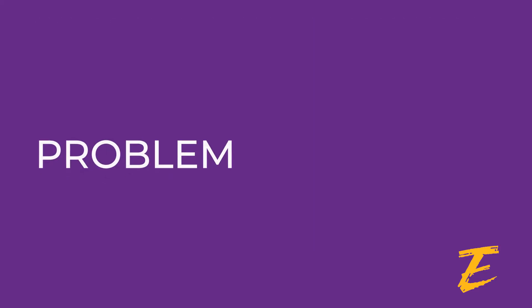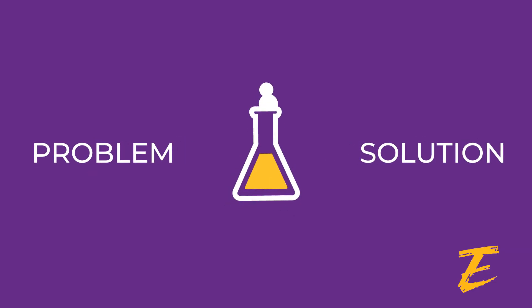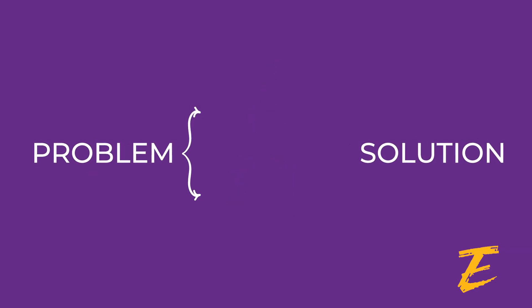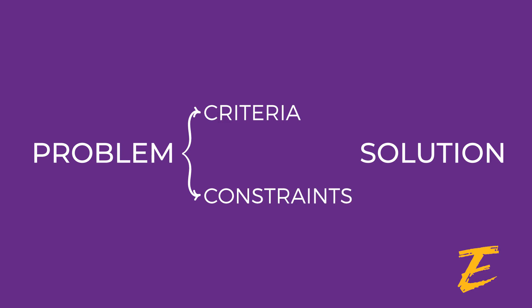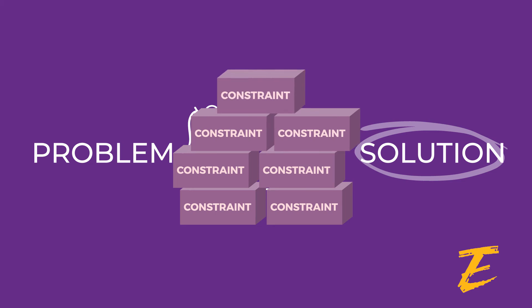Start with the problem you want to solve. Do some research to see what's already been done. Then come up with your own criteria and constraints. Criteria means everything your solution must have, and constraints are all the obstacles that limit your solution.